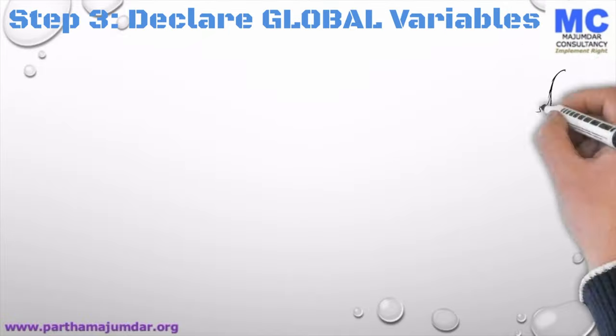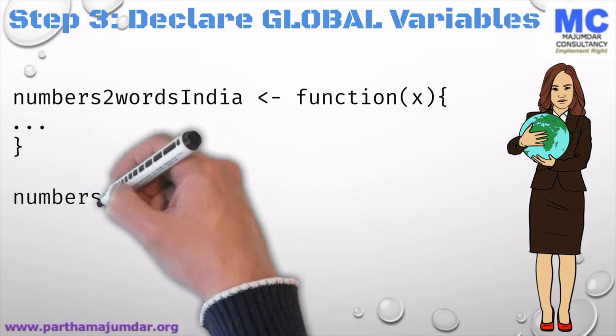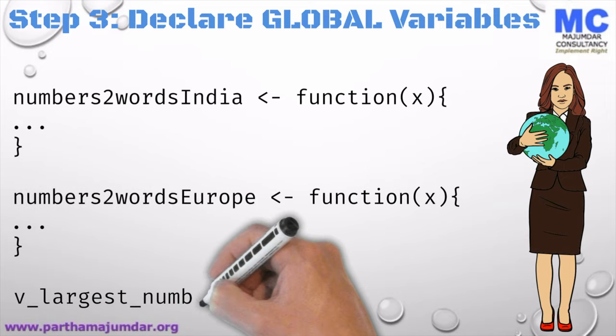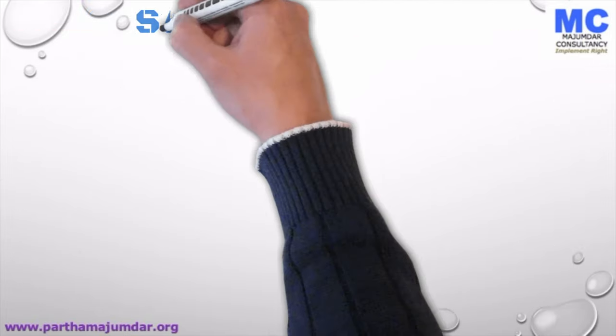After loading the libraries, we need to declare all the global variables required for our application. In our case, we will have two functions, numbers_to_words_India and numbers_to_words_Europe, which will convert numbers to words according to the style selected. We will also allow a largest number which can be entered by the user, stored in the variable v_largest_number. The variables declared in this manner can be accessed from any part of the Shiny app.